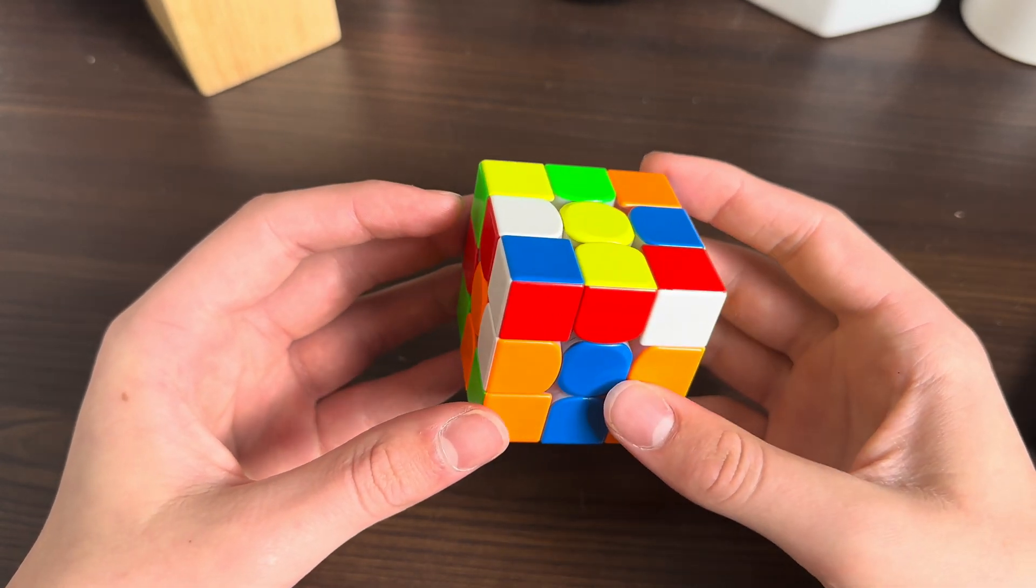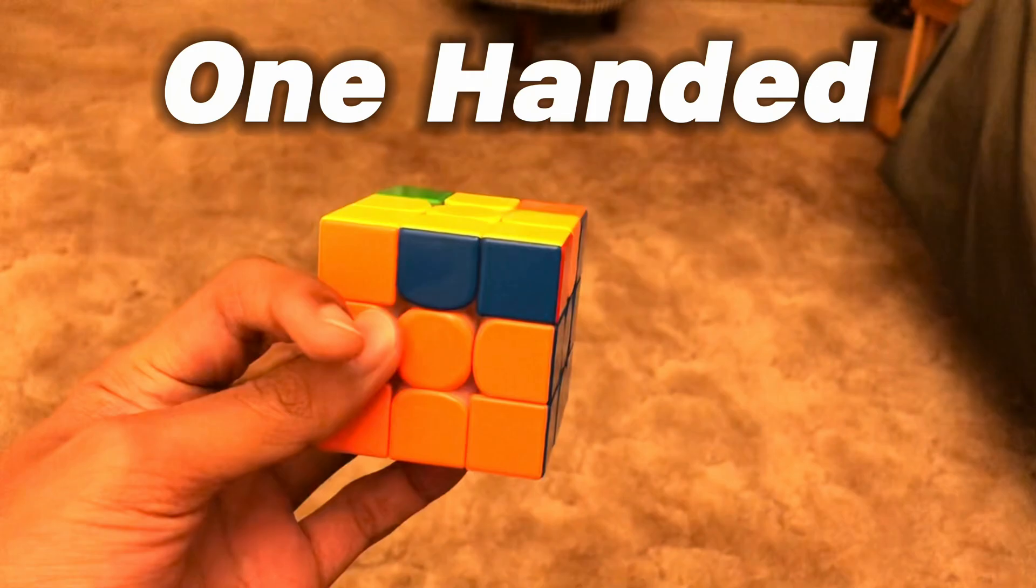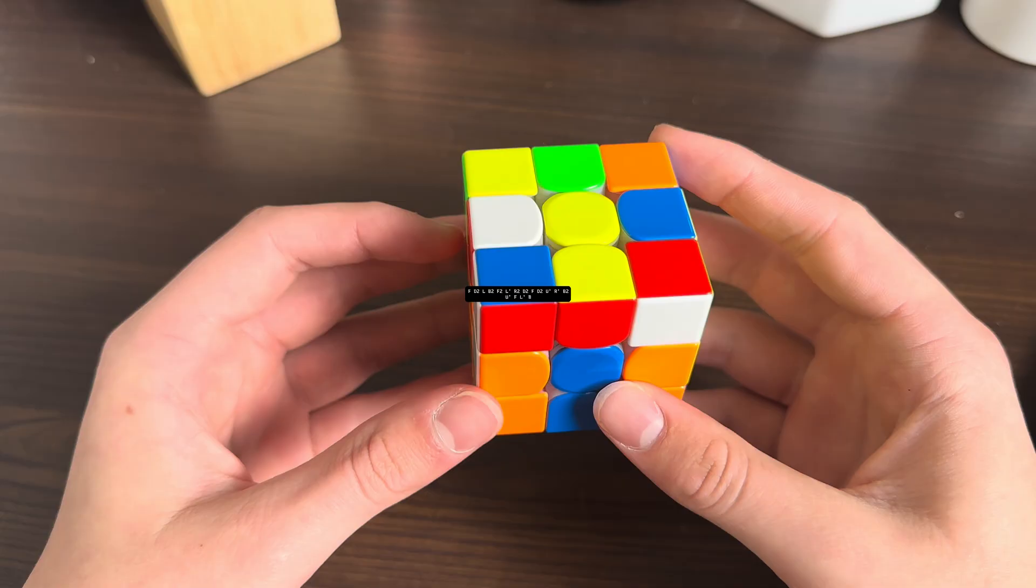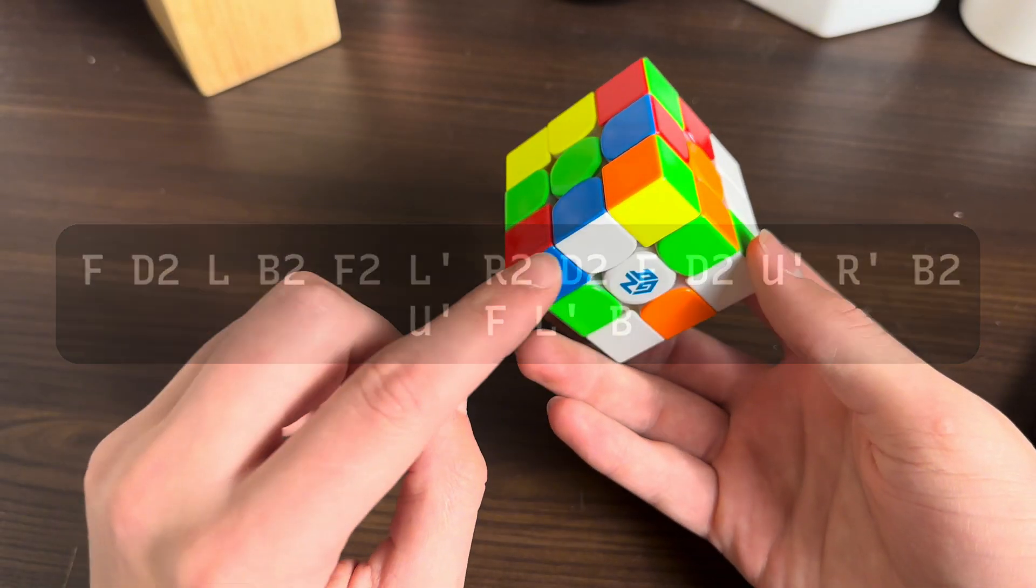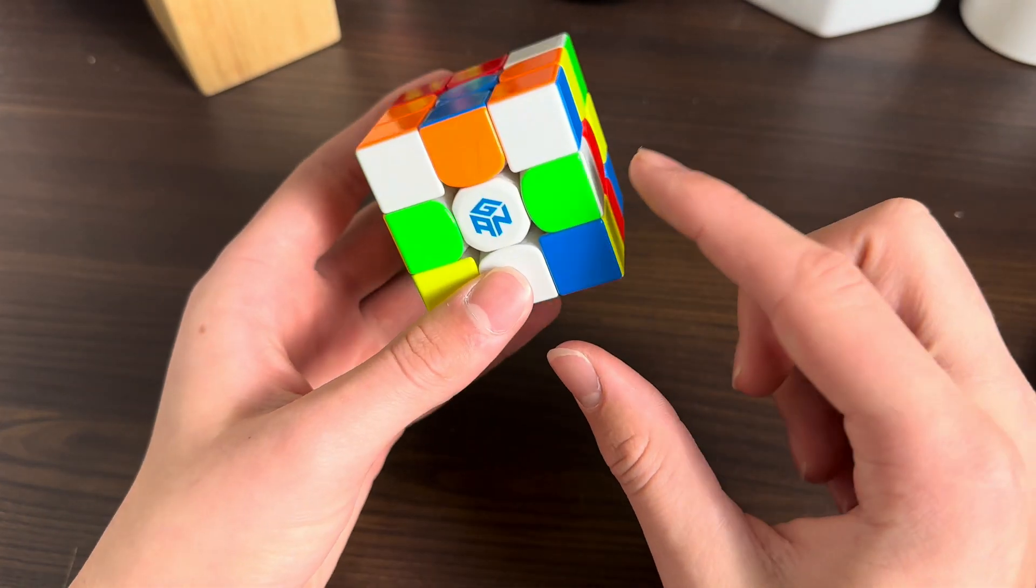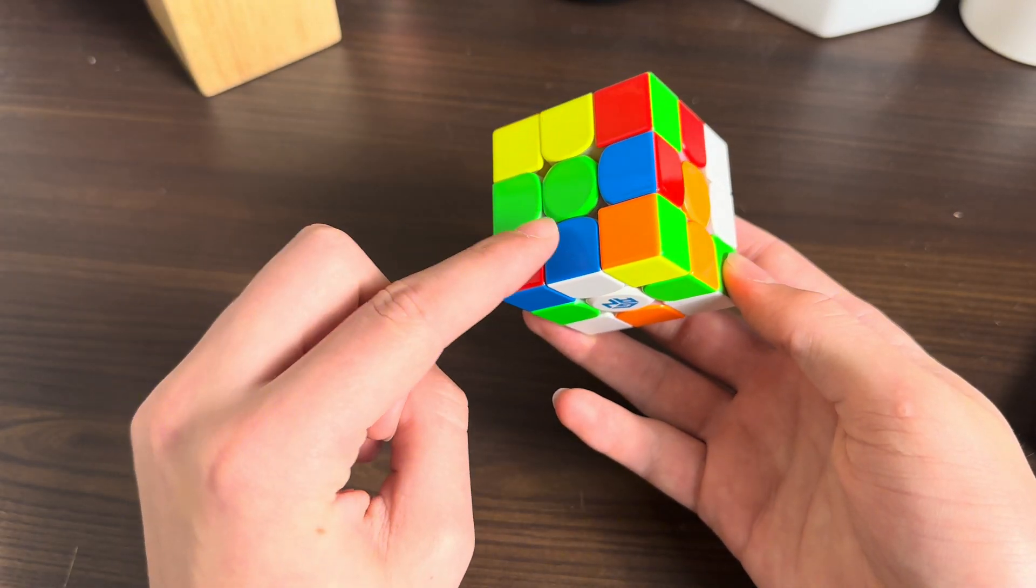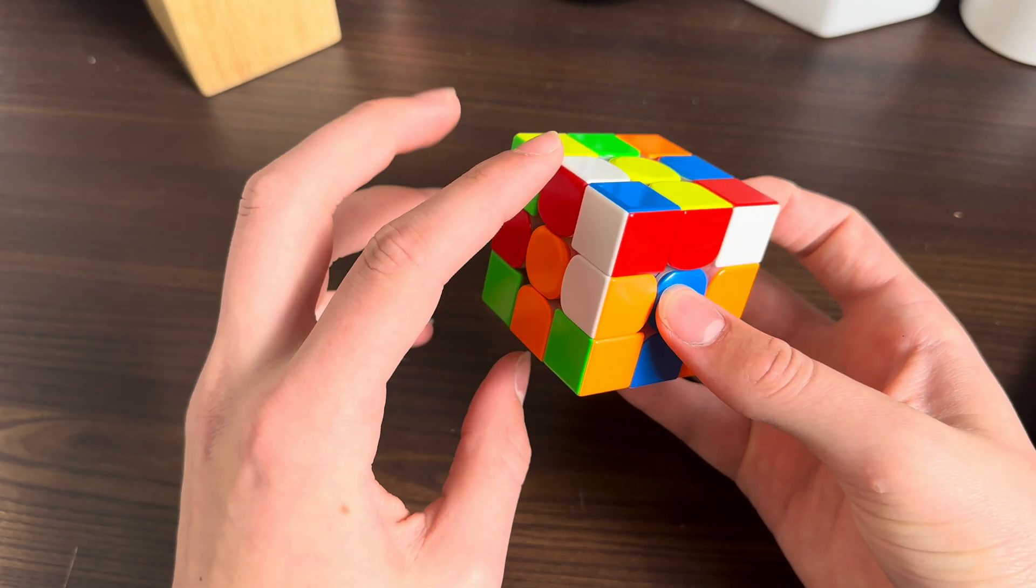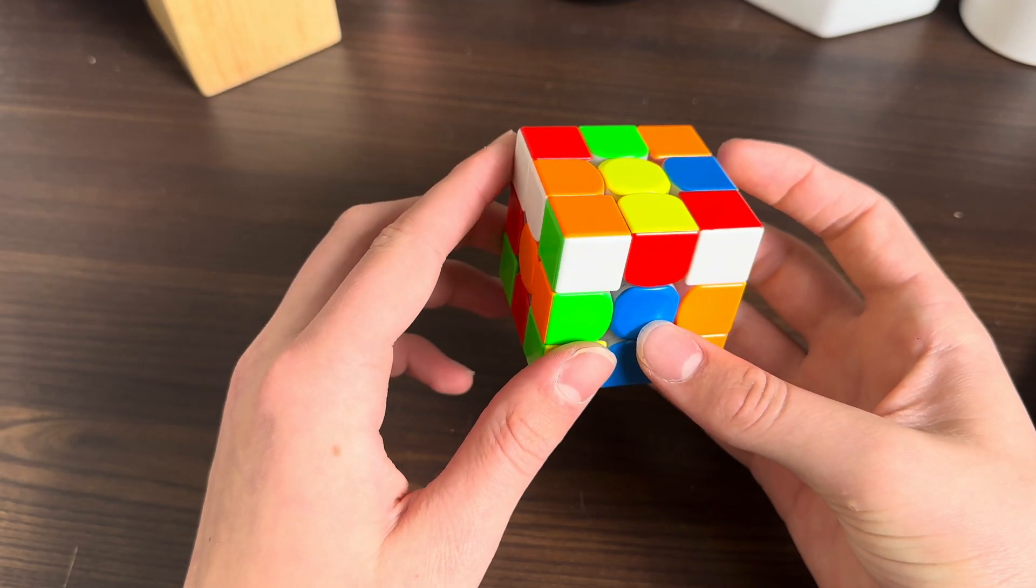What's up guys, we got another example solve today with the ZB method, but we also have Cubing Fedora doing an example solve. For this one I would do white cross - cross pieces are here, here, here, and here. First off I want to solve blue and red. Blue is already solved, I'll insert red with an L prime, but then I'll do a U move before inserting orange, then I'll insert red with another L prime.